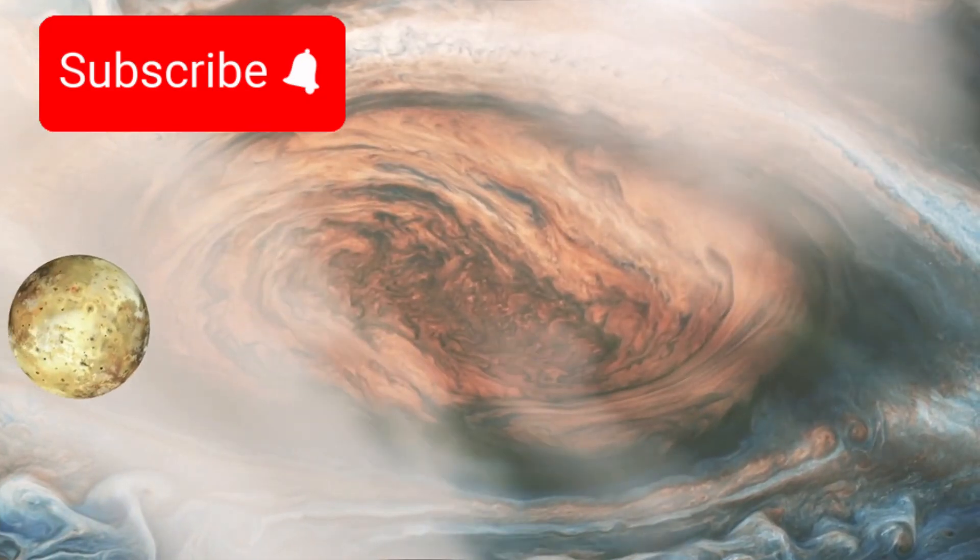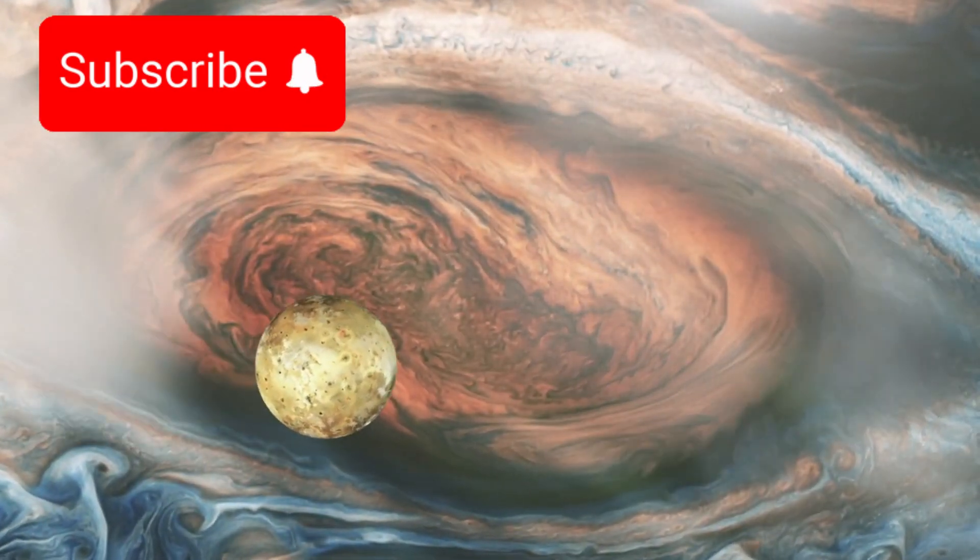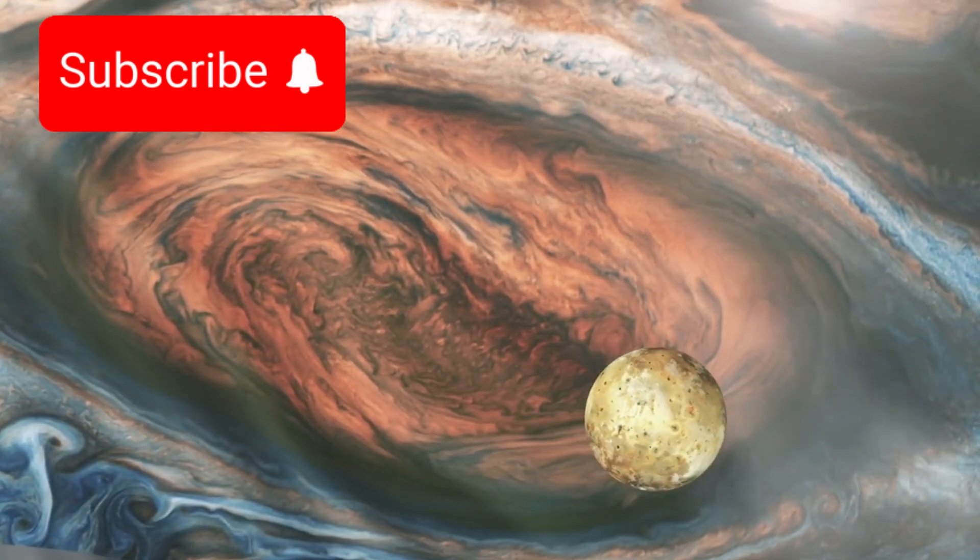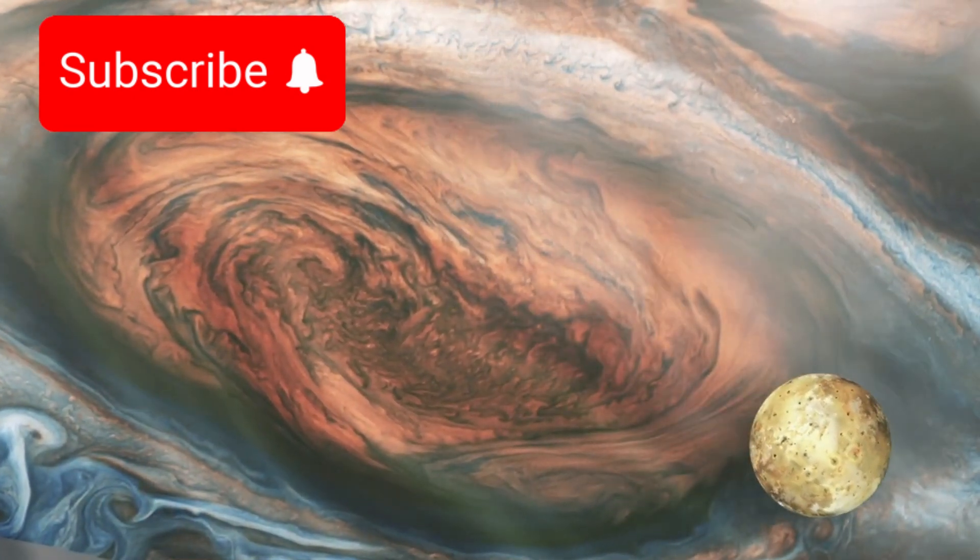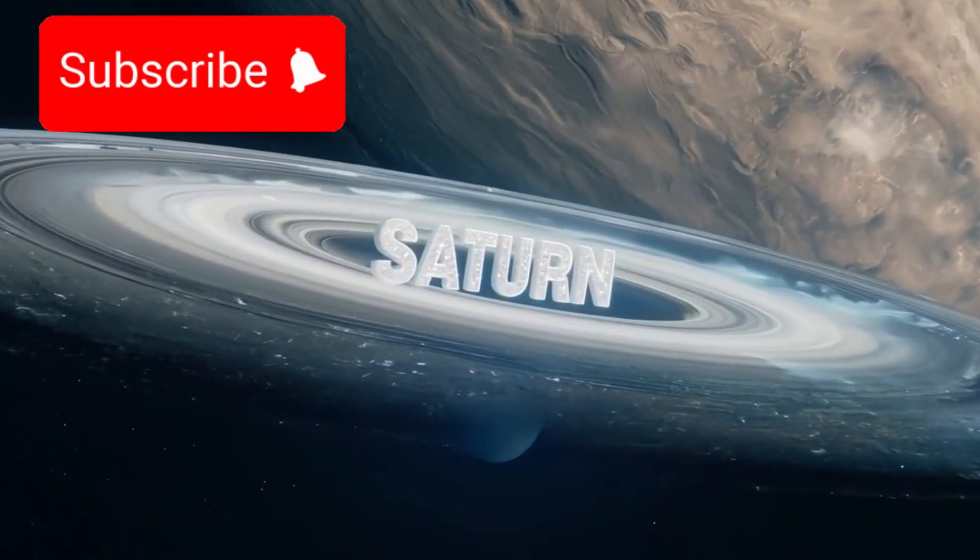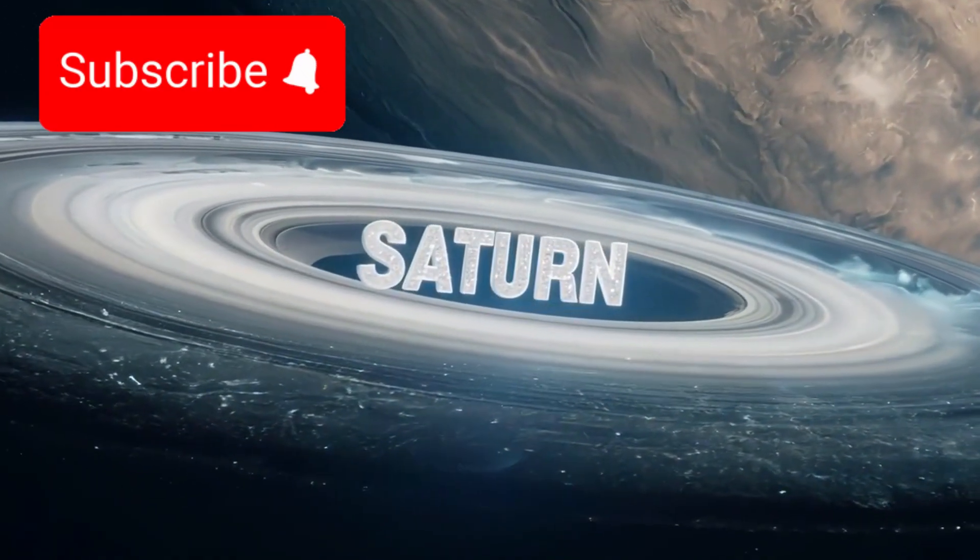Voyager 1 first visited Jupiter in 1979, capturing stunning images and revealing volcanic activity on its moon Io, the first volcanoes ever observed outside Earth. A year later, it flew past Saturn, showing detailed views of the planet's rings and discovering new moons.